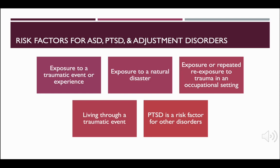There are risk factors for acute stress disorder, PTSD, and adjustment disorders, and we would want to assess individuals to see if they need further screening. We ask about exposure to a traumatic event: motor vehicle crashes, sexual assault, physical abuse. For adjustment disorder, the event might be less severe — loss of employment, a child moving schools, or death of a parent. We also ask about natural disasters, fires, storms, or events like 9-11.